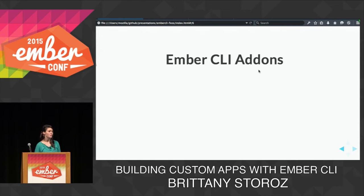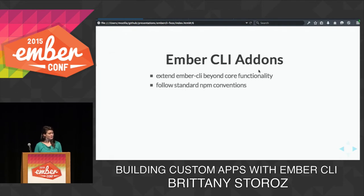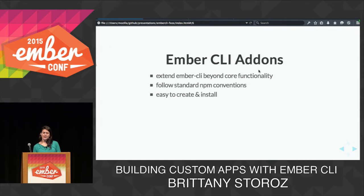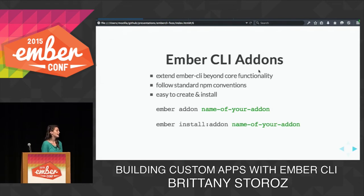Ember CLI add-ons are the way that you extend the core functionality of Ember CLI. They're basically just NPM packages, so they follow all the standard NPM conventions. They have a package.json file that points to an index file as its entry point — that's where you add your custom logic. To create one, you run 'ember addon name-of-your-addon'. To install one in an existing project, you run 'ember install addon-name'.